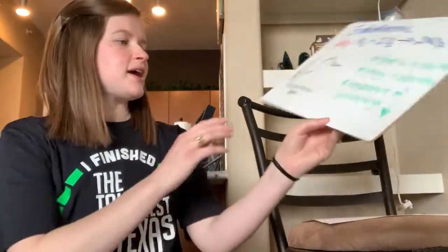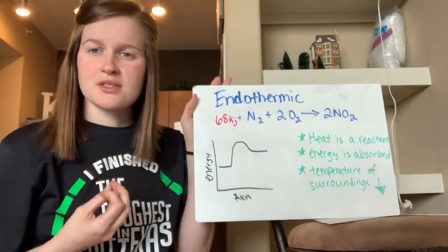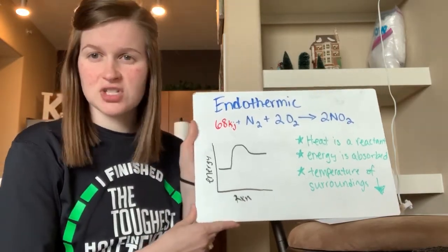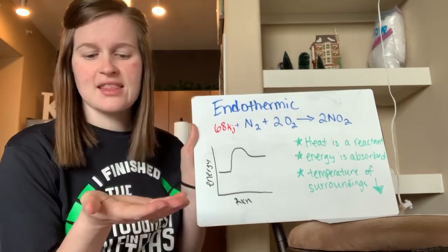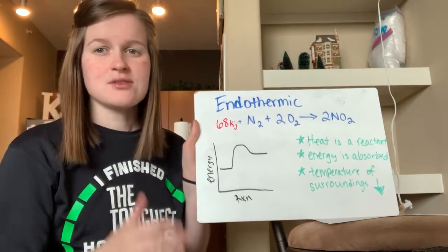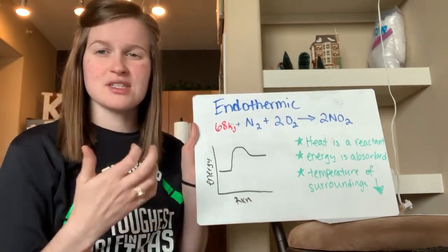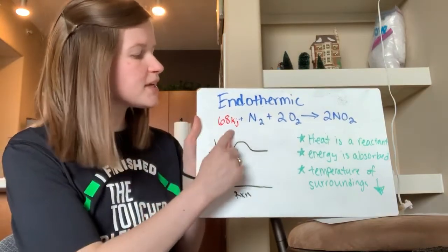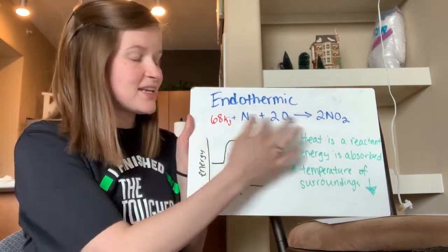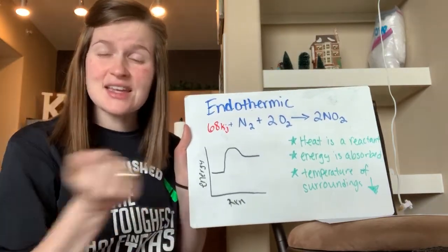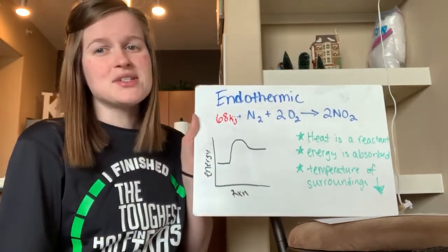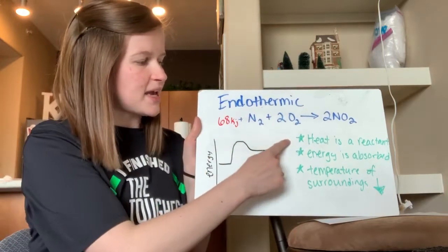Now for endothermic reactions. An endothermic reaction is when the system is absorbing energy from the surroundings — it's taking in energy. An example I like to use is ice in my hand. That ice is absorbing heat from my hand to make it melt, so it's taking away from its surroundings and absorbing that energy. Here, energy would be a reactant instead, because it's needed to make the reaction happen. That ice needs energy to absorb in order to melt. If it doesn't have the energy, it will stay ice until it gets that energy. So heat is a reactant.